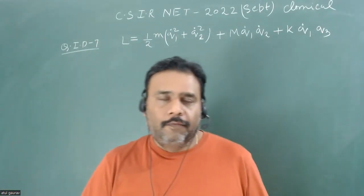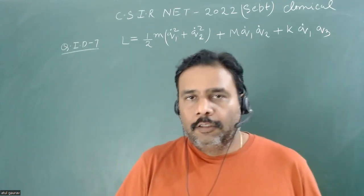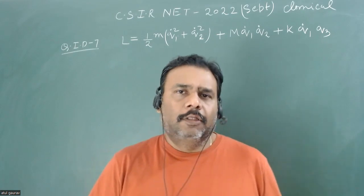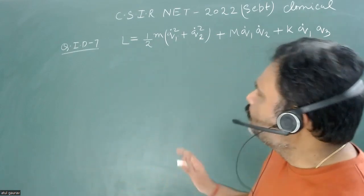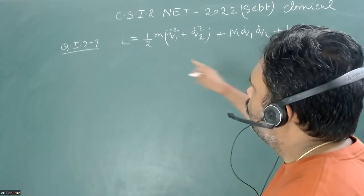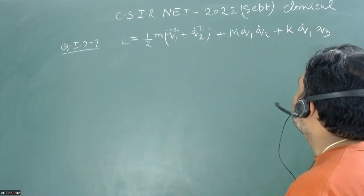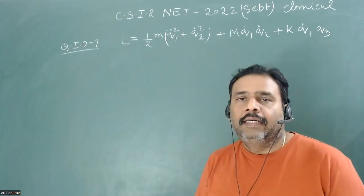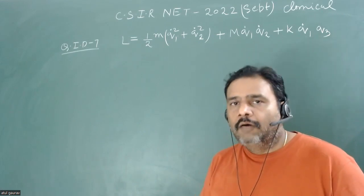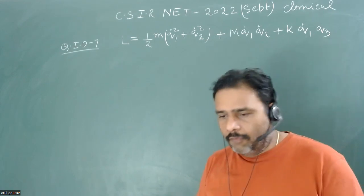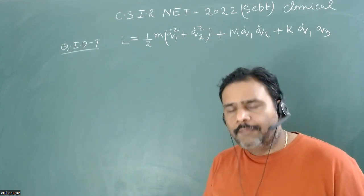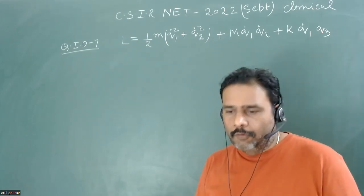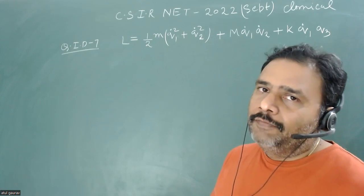Let's try to solve one more problem from CSIR NET 2022, held in the month of September. This is a very nice problem. The Lagrangian is given where Q1, Q2, and Q3 are generalized coordinates and we have to find how Q1, Q2, Q3 are evolving with time. We have to write the Lagrangian equation of motion and then solve the differential equation. This Lagrangian is very interesting.